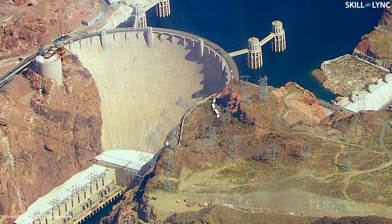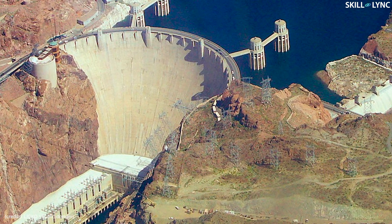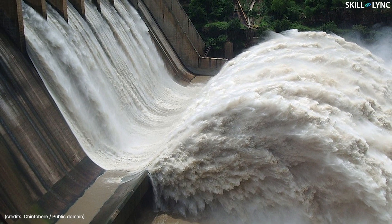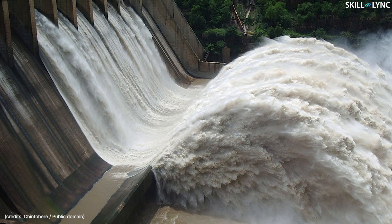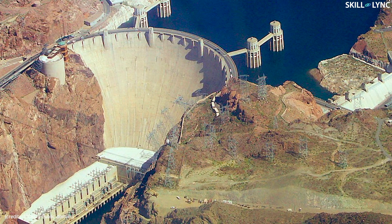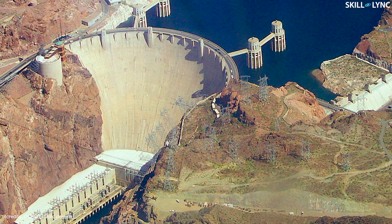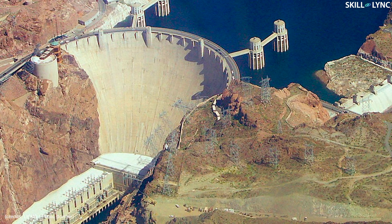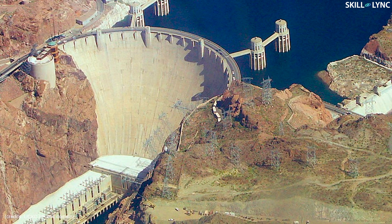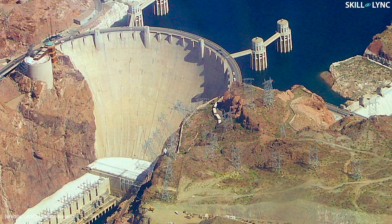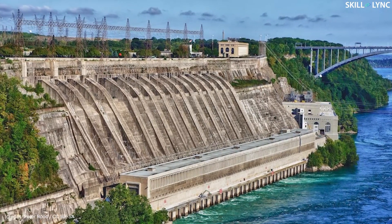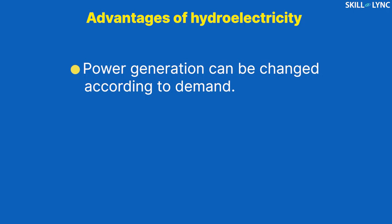Therefore, to get a sufficiently high water level, dams are built across the flow of the water body. Dams help in raising the water level and also control the flow of water. Hydroelectric power plants run on water, but water is not available at the same rate throughout the year. Hence, the reservoir is used to store water for availability at the time of high demand.